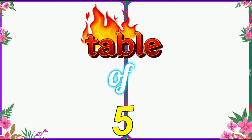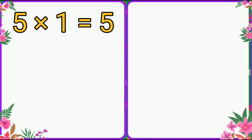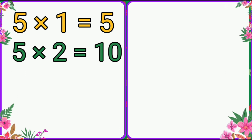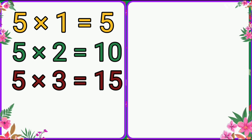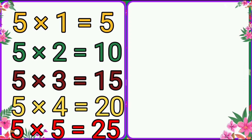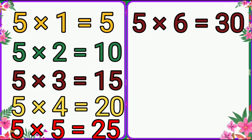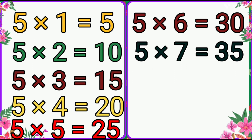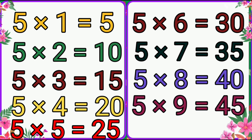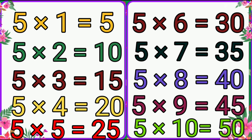Table of five. Five ones are five. Five twos are ten. Five threes are fifteen. Five fours are twenty. Five fives are twenty-five. Five sixes are thirty. Five sevens are thirty-five. Five eights are forty. Five nines are forty-five. Five tens are fifty.